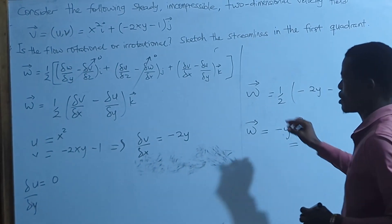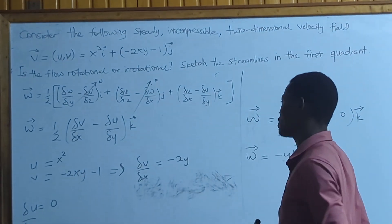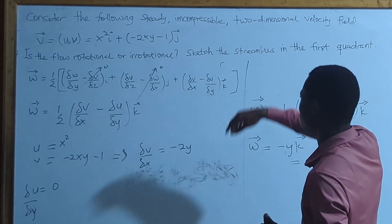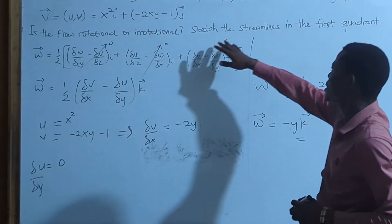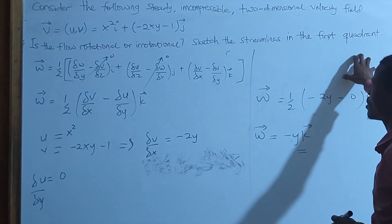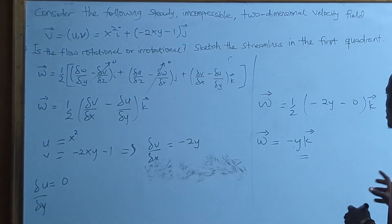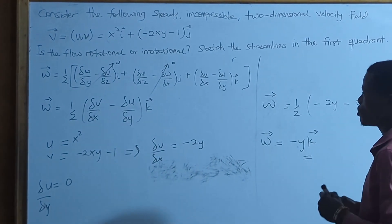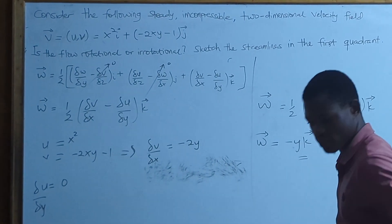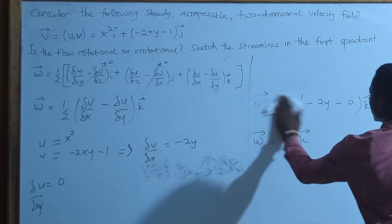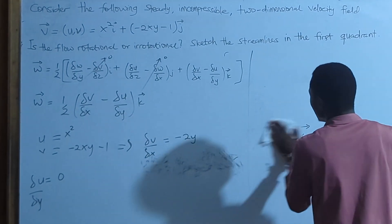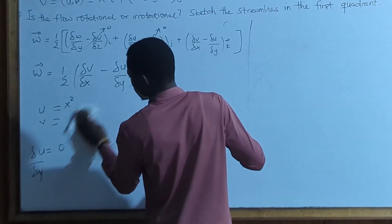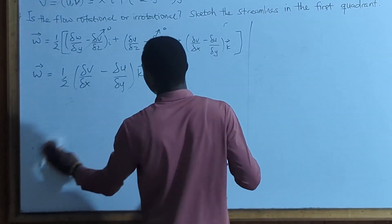This implies that the fluid is rotational, because we did not get an answer equal to zero. If omega had been zero, it would have been irrotational. Now we move on to the second part, where we sketch the streamline in the first quadrant. First we need to build a table of values.